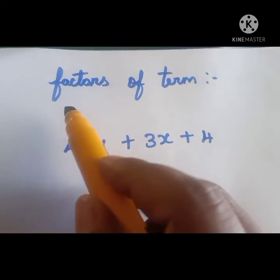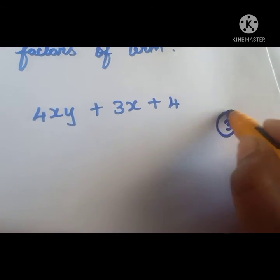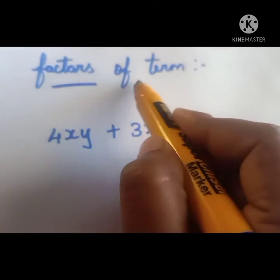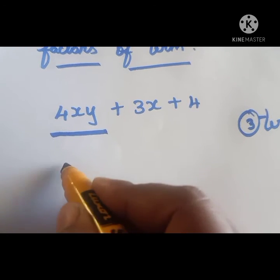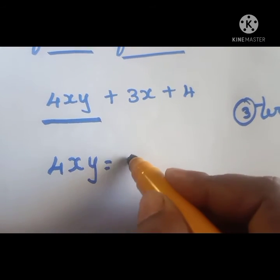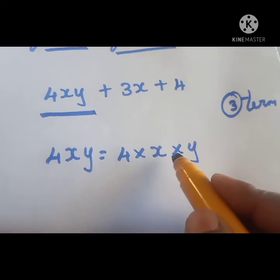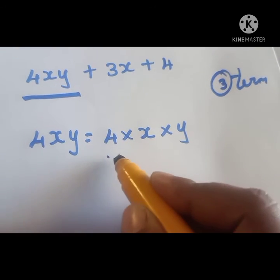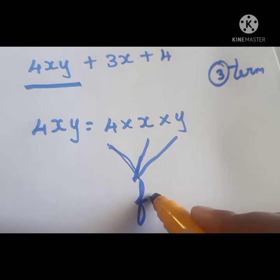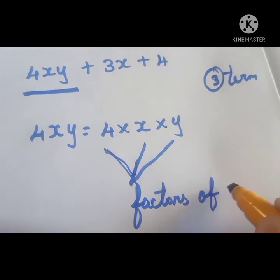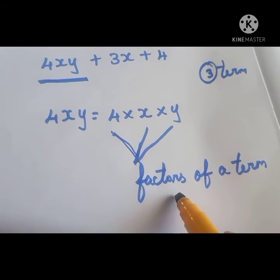Now we will see factors of a term. We have 3 terms here. In 4xy, what are the factors? 4xy can be written as 4 into x into y. So 4, x, and y are the factors of the term 4xy.